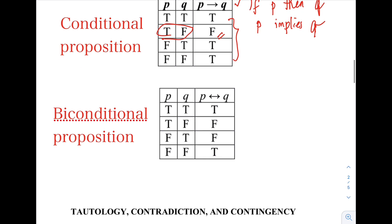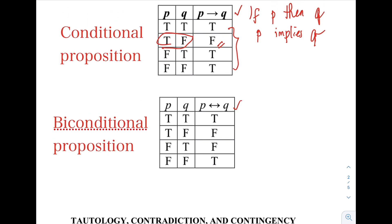Next is the biconditional proposition. The symbol ↔ represents 'P if and only if Q'. As you notice in the table, the biconditional propositions are true if P and Q have the same truth value. If P is true and Q is true, then the biconditional proposition is true. Similarly, if both are false, the biconditional proposition is also true. The rest are false.